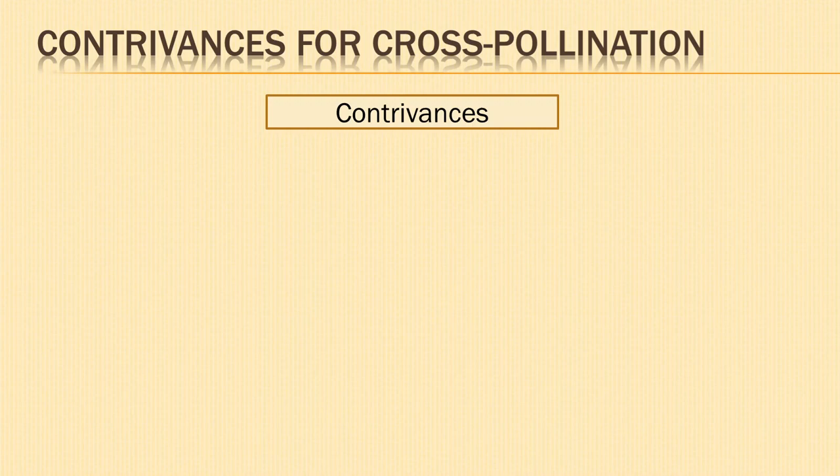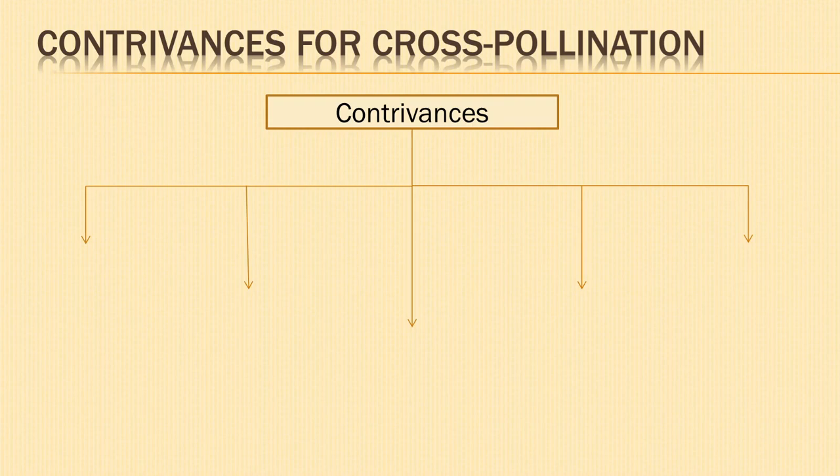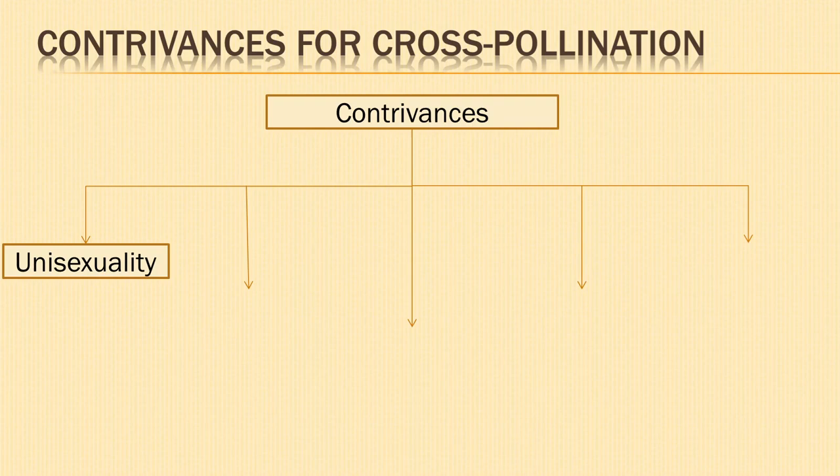Contrivances for cross-pollination: By cross-pollination, better seeds and healthier offspring are normally produced, and certain structural devices in the flower favor it. First, unisexuality or dicliny: unisexual or diclinous flowers — separate male and female flowers — may be born on the same plant; such a plant is said to be monoecious, e.g. maize, cucumber. In monoecious plants, there may be self or cross-pollination. When male and female flowers are borne on two separate plants, it is said to be dioecious, as seen in palm, mulberry, etc. In dioecious plants, cross-pollination is a basic necessity.